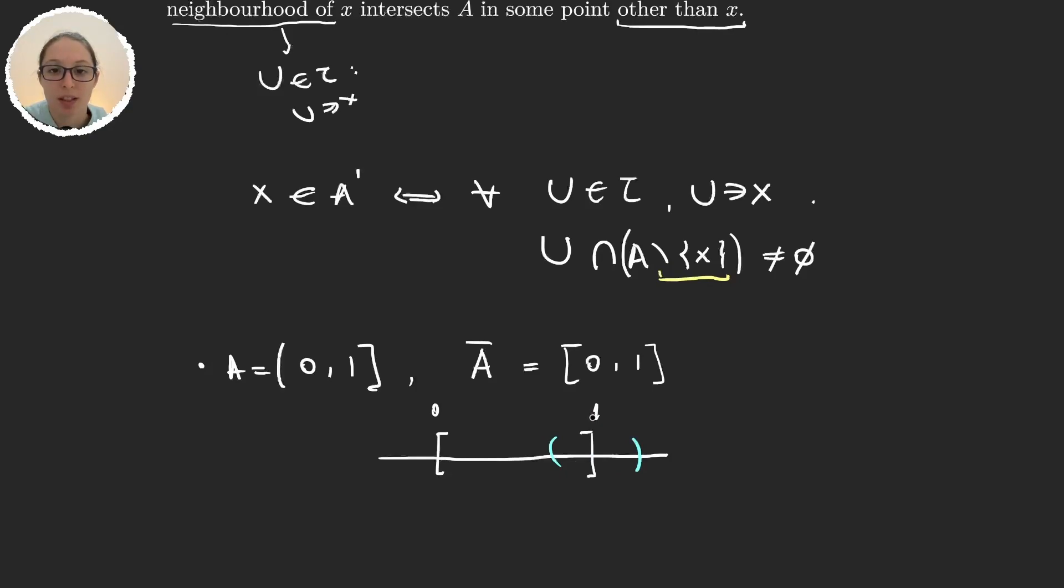So to see that 1 is a limit point I would have to get all these open intervals that are neighborhoods of 1. But every time I move to the left of 1 a bit, I'm immediately having infinite elements of my set A. So that proves that 1 is a limit point.